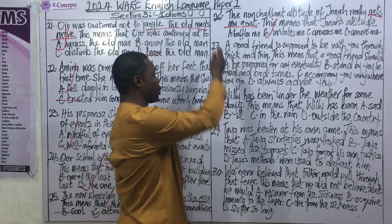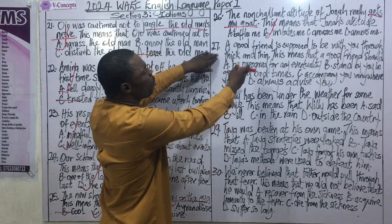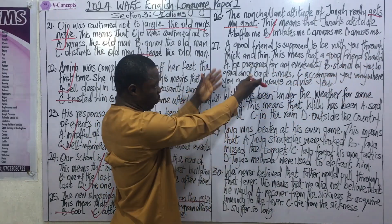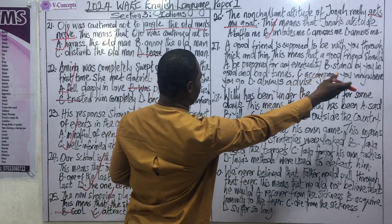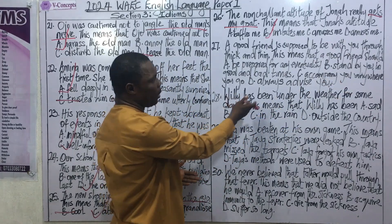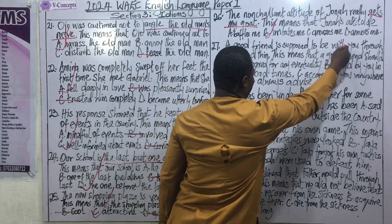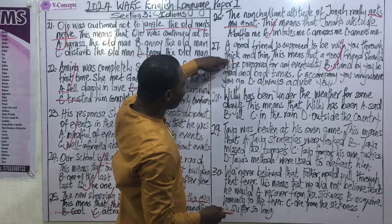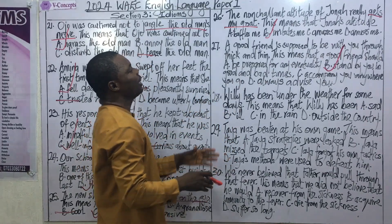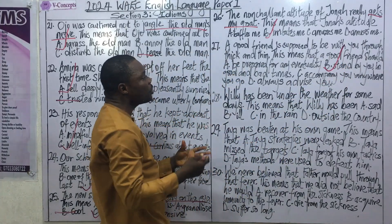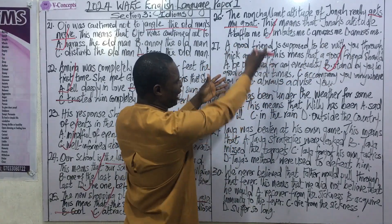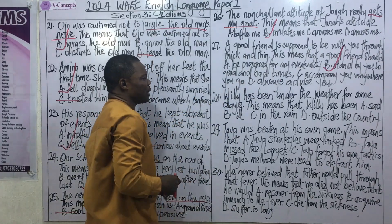Question 27: A good friend is supposed to be with you through thick and thin. This means a good friend should: A) be prepared for any eventuality, B) stand by you in good and bad times, C) accompany you anywhere you go, D) always advise you. The correct answer is B — stand by you in good and bad times. 'Through thick and thin' structurally captures the contrast of good and bad, matching option B.